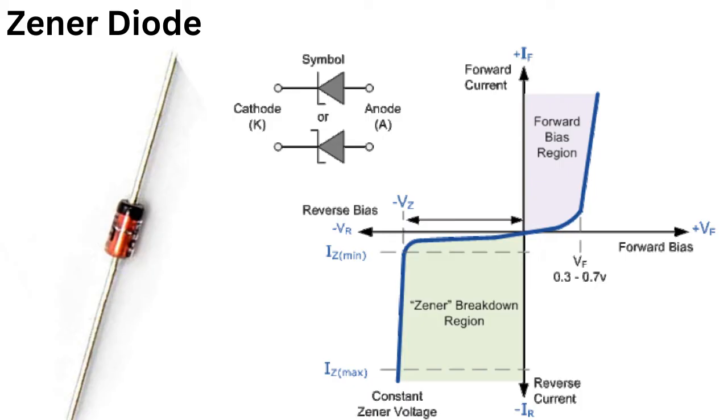The Zener diode's characteristics can be represented by a graph, with the voltage across the diode on the x-axis and the current flowing through it on the y-axis. The graph will show a steep increase in current when the diode reaches the Zener voltage, and then a relatively constant current as the voltage increases further.